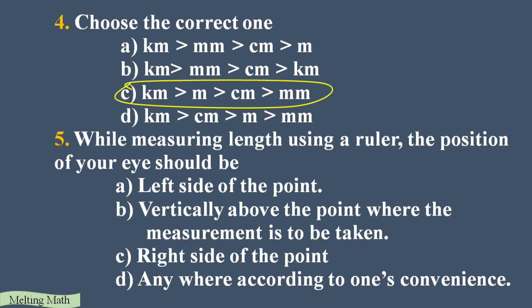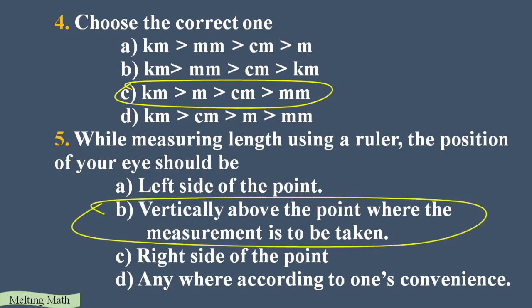Fifth question: while measuring the length using a ruler, the position of your eye should be — options are left side of the point, vertically above the point where measurement is to be taken, right side of the point, or anywhere according to convenience. When measuring an object, the vertical position is very important, so Option B is correct: vertically above the point where the measurement is to be taken.